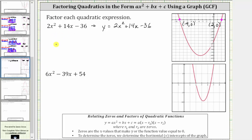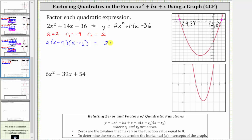So now to write the given expression in the form a times the quantity x minus r sub one times the quantity x minus r sub two: we know a, the coefficient of x squared, is two. Let r sub one equal negative nine and r sub two equal positive two. It does not matter which zero is r sub one and which is r sub two. Performing substitution, we have two times the quantity x minus negative nine, which simplifies to x plus nine, times the quantity x minus two. This is the factored form of the given quadratic expression.